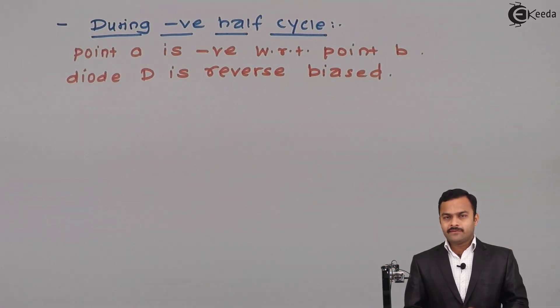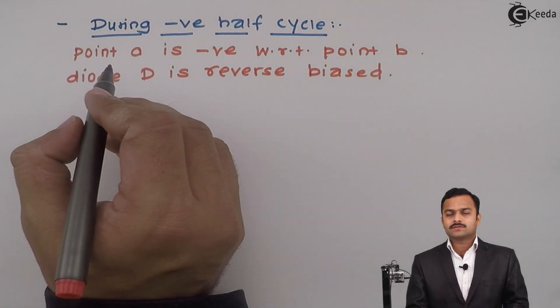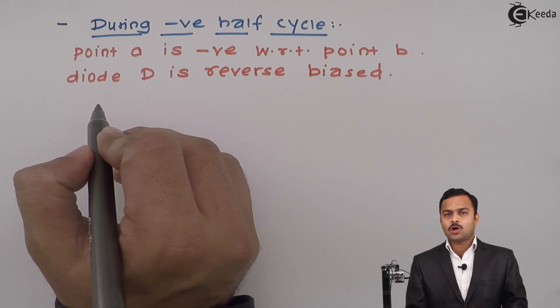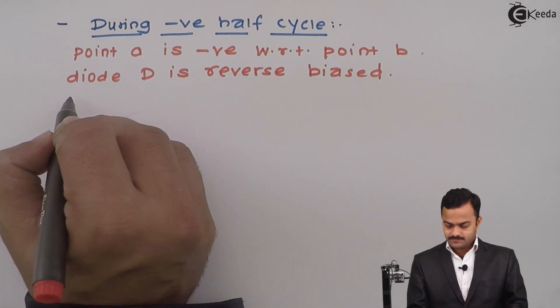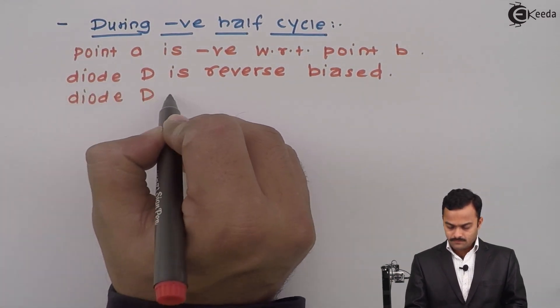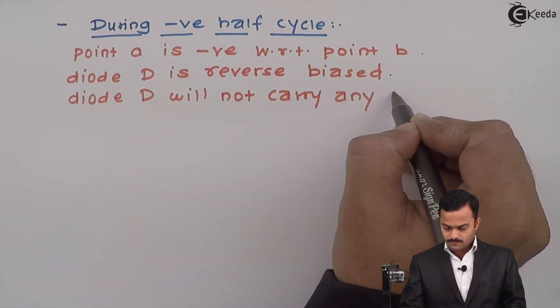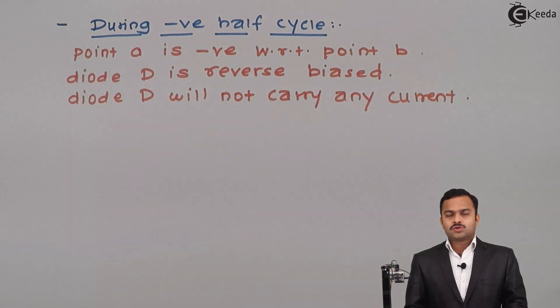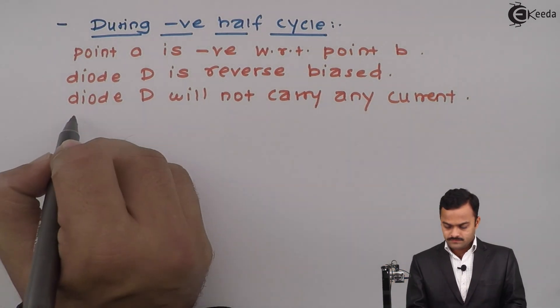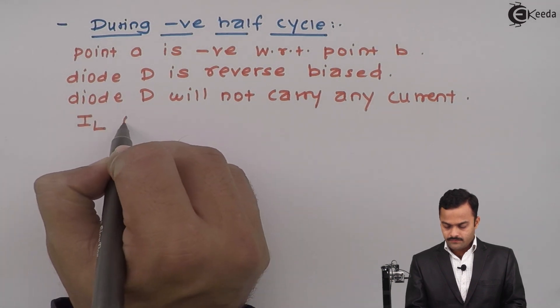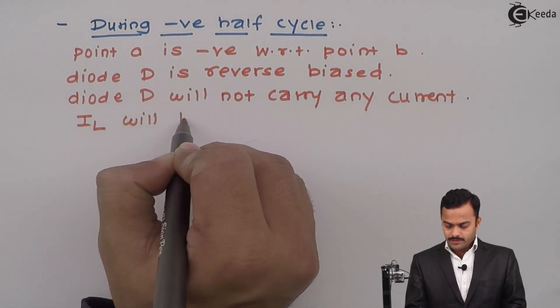Because now D is reverse biased, it will act as an open switch and will not carry any current from the load resistor. So current from the load resistor will become zero, so IL will become zero.